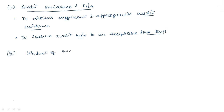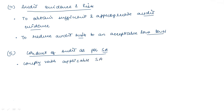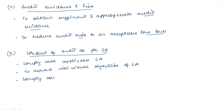The next is the conduct of audit as per standards of auditing. Whenever we write SA, it means standards of auditing. You are required to comply with applicable standards of auditing. You are required to achieve the individual objectives and requirements of each SA — that means the requirements for conducting an audit as per that particular standard of auditing.